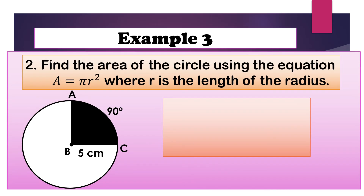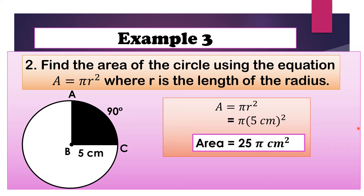Step 2, we are going to find the area of the circle using the equation A equals pi R squared, where R is the length of the radius. In circle B, the radius is 5 cm, so we substitute R with 5 cm. We have A equals pi times 5 cm squared. The square of 5 is 25, and the square of cm is square cm. So the area of the circle is 25 pi square cm.